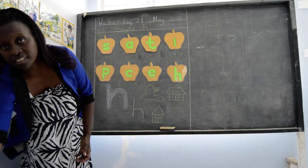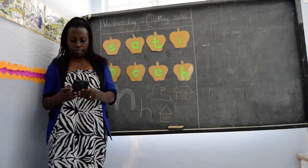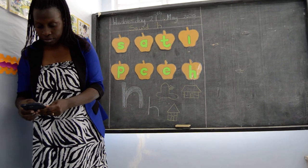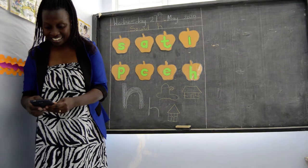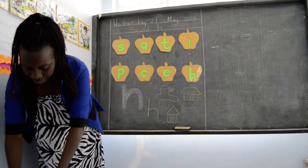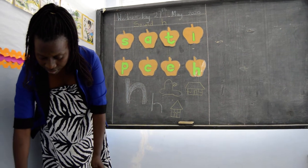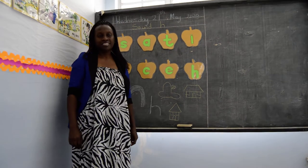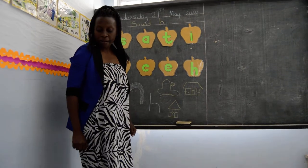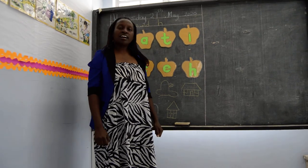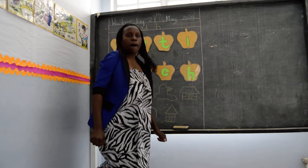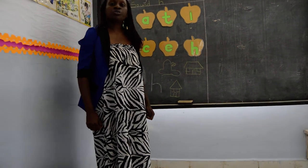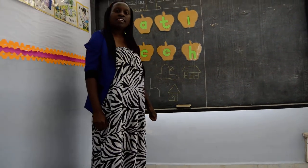Shall we sing the song using our Jolly Phonics app? Let's begin. Here we are. I like to hop, hop, hop, hop all the rounds. I like to hop, hop, hop, hop all the rounds. I like to hop, hop, hop, hop all the rounds.